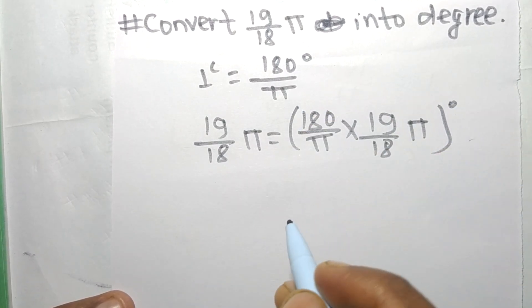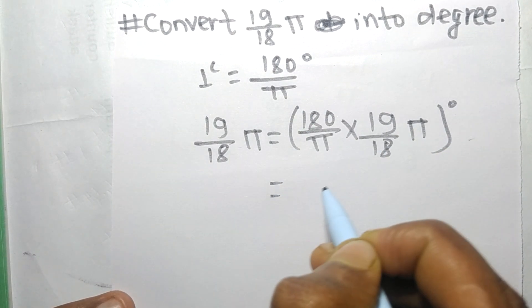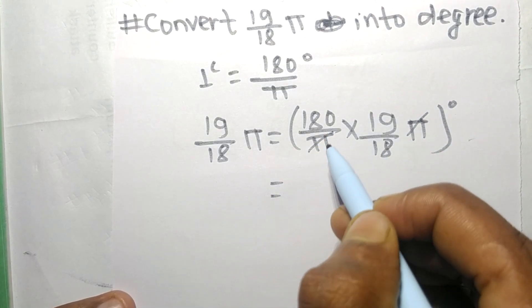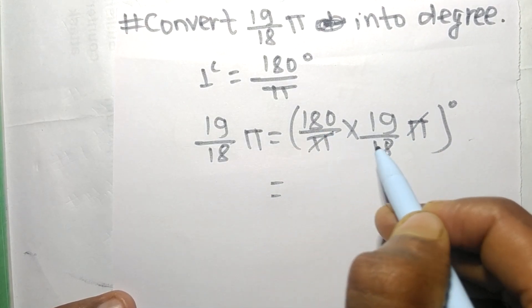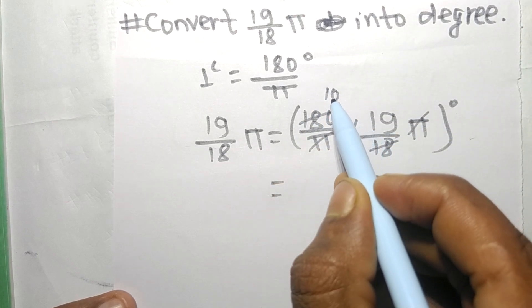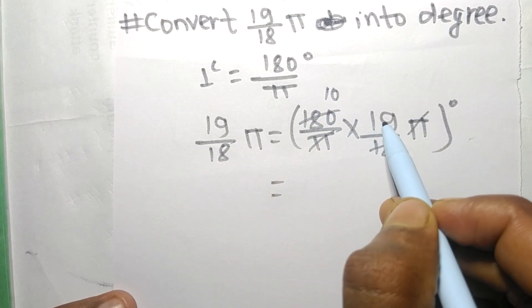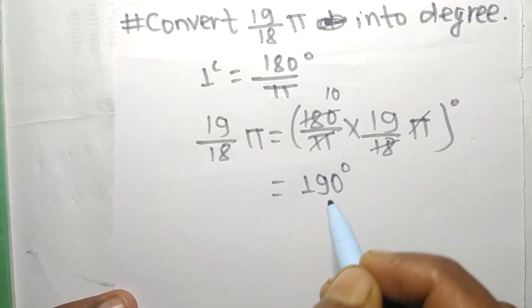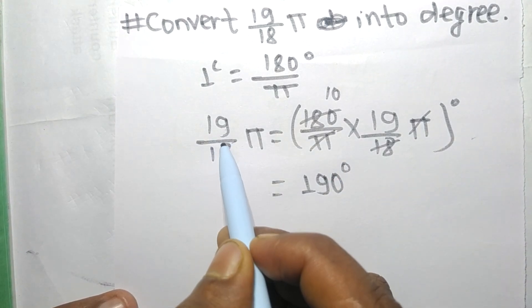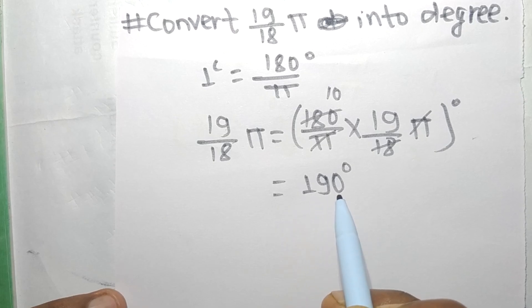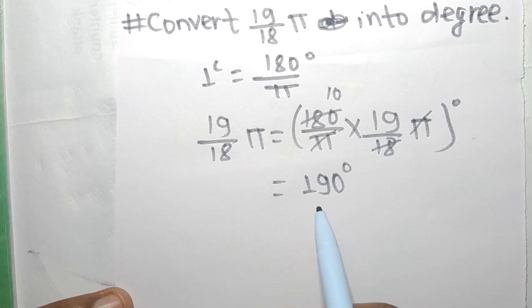Now we can cancel π with π. Dividing 180 by 18 we get 10, and 10 times 19 equals 190 degrees. So 19/18 π is equal to 190 degrees.